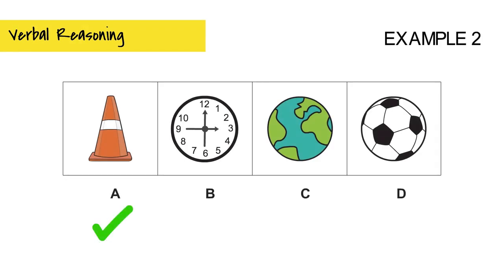Example 2, what goes together? The answer is A, all the other objects are round.